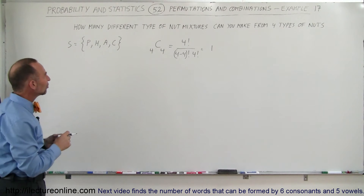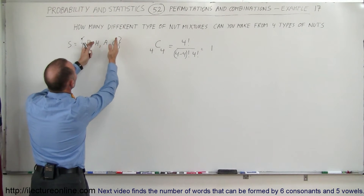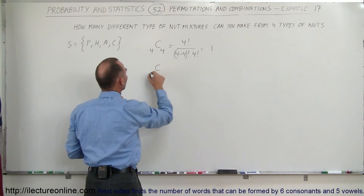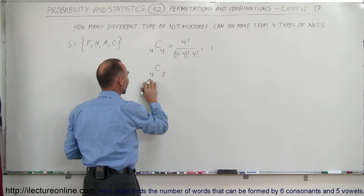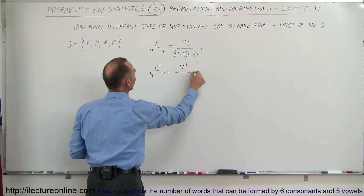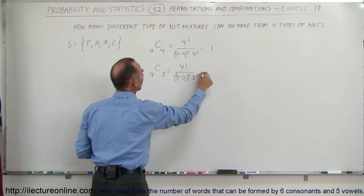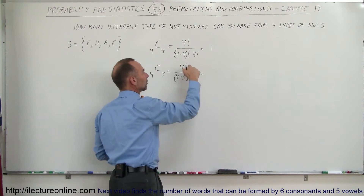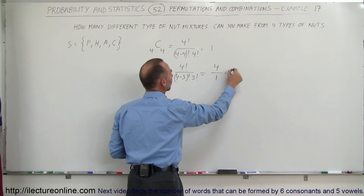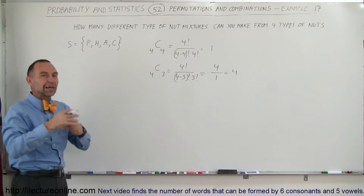What if we take three of the four nuts? The number of combinations C(4,3) equals four factorial divided by (four minus three) factorial times three factorial. Four factorial divided by three factorial is four, and one factorial is one, so there are four different ways to grab three of the four nuts and make a mixture.